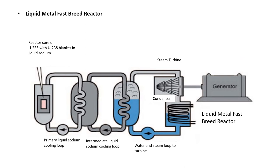The liquid metal fast breeder reactor is a reactor design cooled by liquid metals like sodium, NaK, lead, or lead-bismuth eutectic — totally unmoderated and producing more fuel than it consumes. They breed fuel because they produce fissionable fuel during operation through neutron capture. These reactors can function much like a pressurized water reactor in terms of efficiency and do not require high-pressure containment as the liquid metal does not need to be kept at high pressure even at very high temperatures. BN-350 and BN-600 in the USSR and Super Phénix in France were of this type.